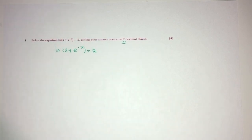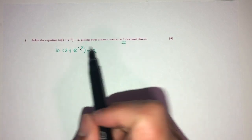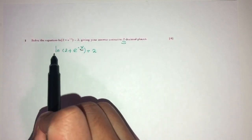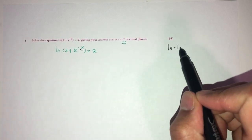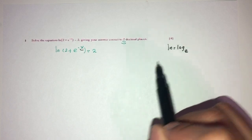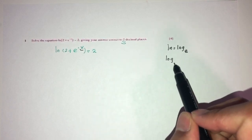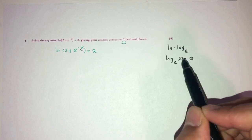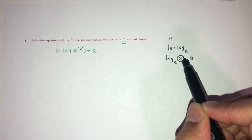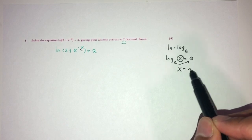Solving means finding the unknown, so we have to find the value of x. We have to first simplify this. What is ln? ln is actually log base e. To simplify this — for example, if I have log base e of something equal to a — to find the value inside, I have to send the base over here. So to find x, it has to be e to the power of a.